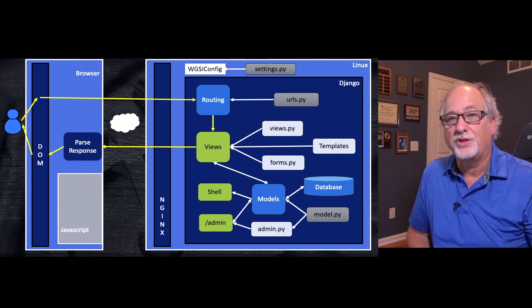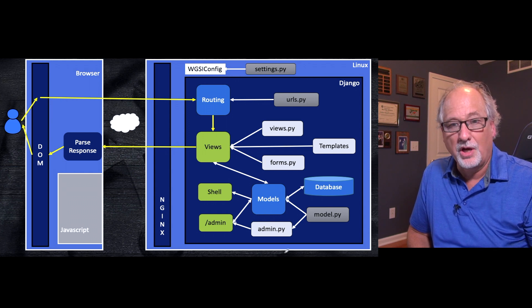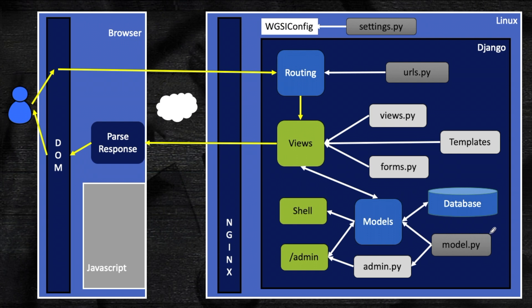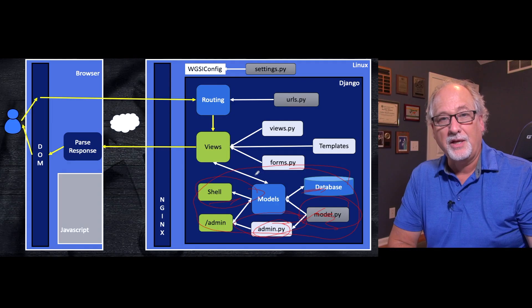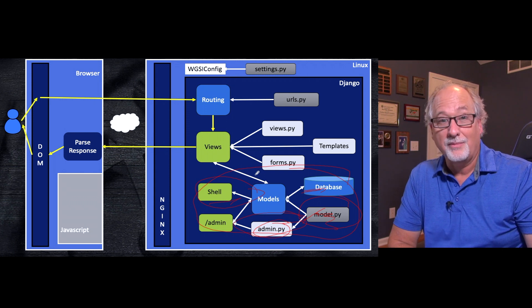We're still building a Django application one piece at a time. We're really focused on model.py and a little bit more on admin.py. model.py is where we define the structure of our database, and we see this database through data model objects. We can register our data models in admin.py. We're also going to be talking to things like the shell, or you can even run scripts. We're not talking much about the routing, views, forms, or templates in this lecture — we're really focused on data modeling.